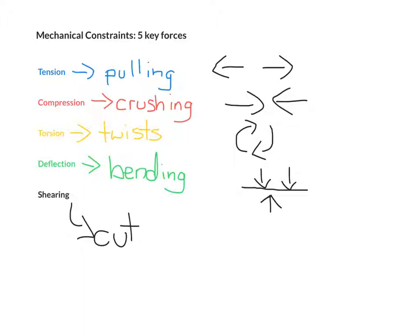Now, obviously, to do shearing, we would need to use things like scissors or pliers, which causes a cut in the material. Now, the symbol for shearing is a little bit trickier to draw. So it's actually a half arrow pointing upwards and a half arrow pointing downwards.